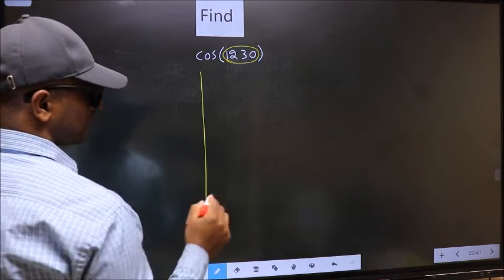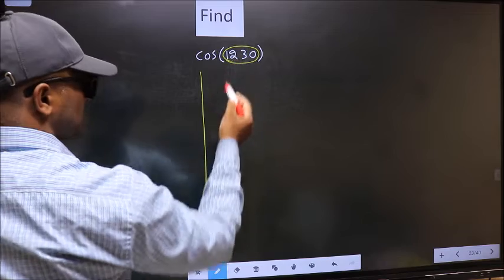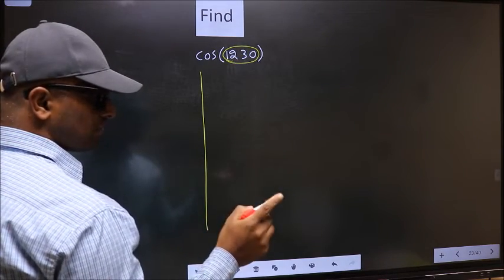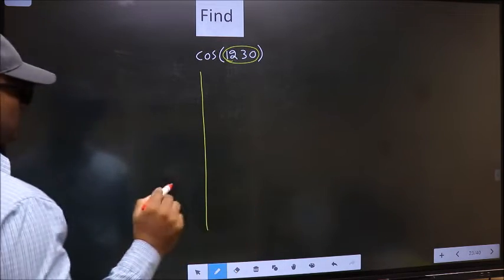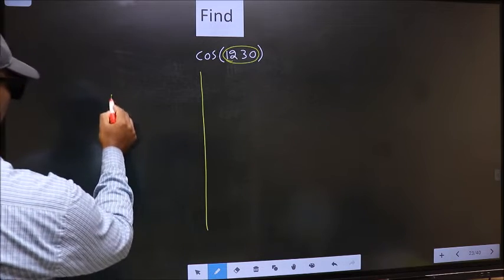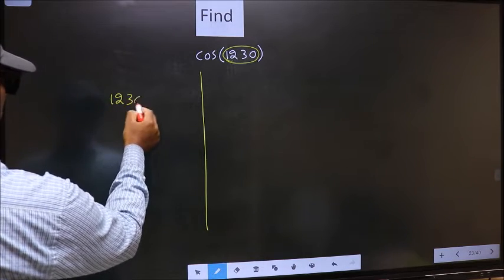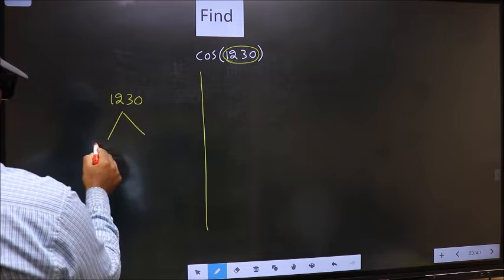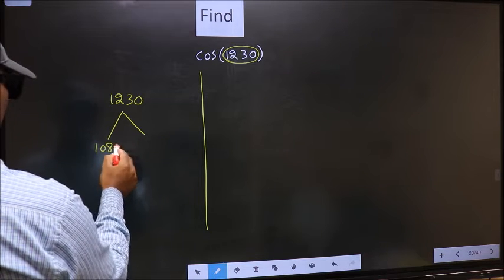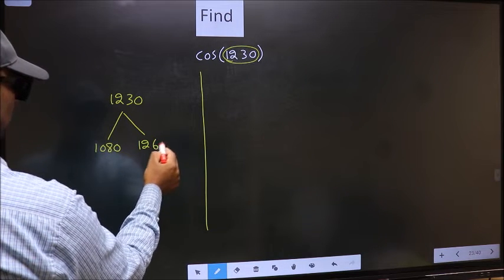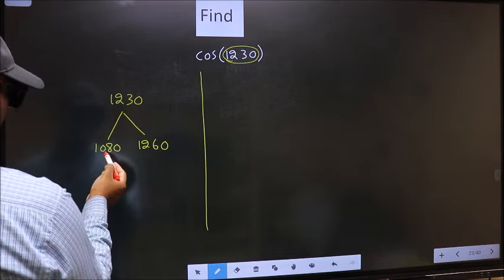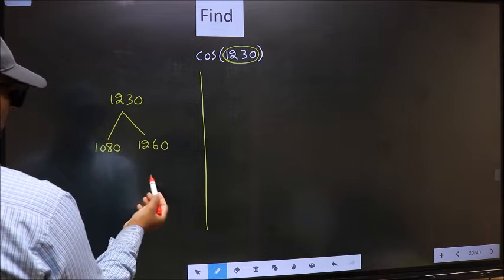Now you should check 1230 lies between which two multiples of 180. What I mean is, 1230 lies between 1080 and 1260. This is 180 times 6, this is 180 times 7.